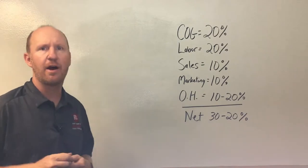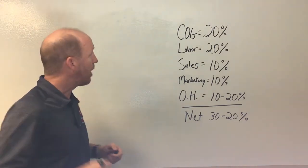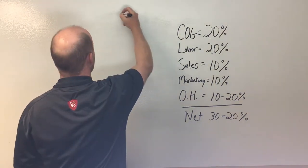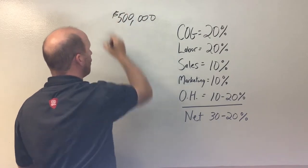Let's say it's your second year in business, you want to do a half a million in revenue. So I'm going to go up here and I'm going to write $500,000. This is your goal.